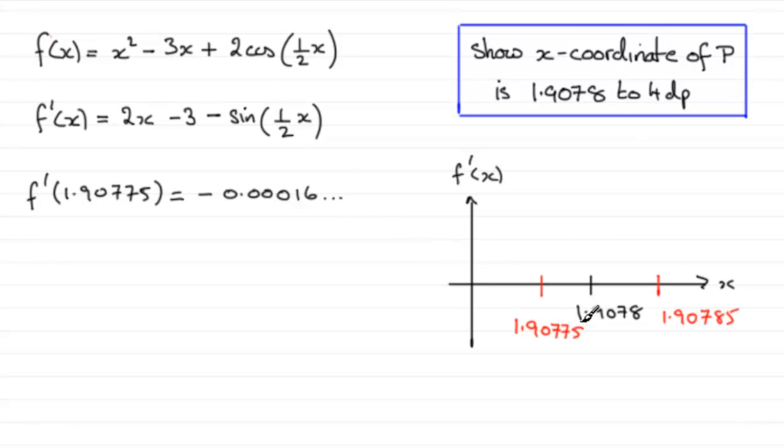So what we're hoping for is that when we put this value in, our upper bound, we now get a positive value. So you need to substitute that upper bound in, 1.90785. And indeed, if you do put this value in here, you end up with a positive value, 0.000007 and so on.